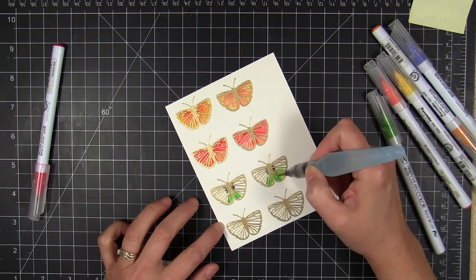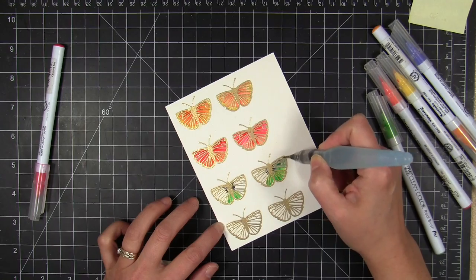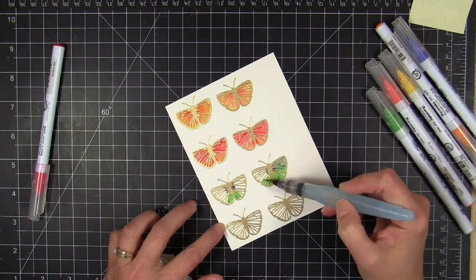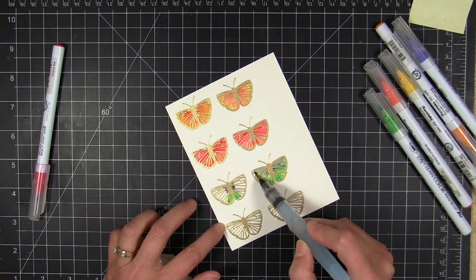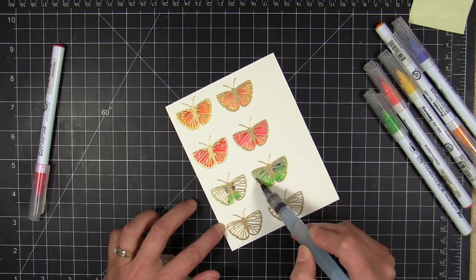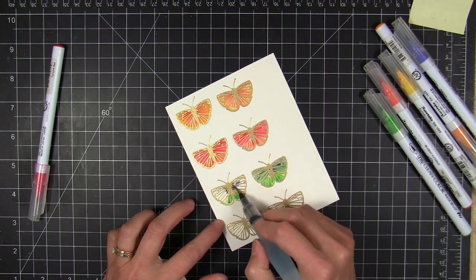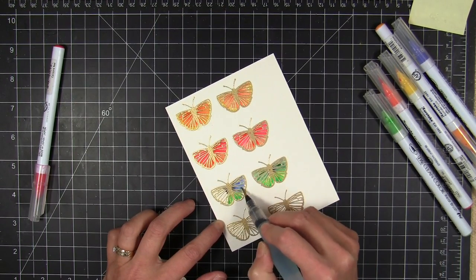I can soak up the excess there with my paper towel. So I'm just gonna keep on coloring all of these butterflies in the same fashion. I was kind of hoping for a two-tone effect, so I've got some colors that work well together, like that bright happy green and that deep dark blue there.